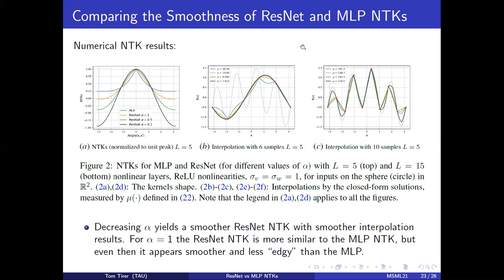And here is what we get with the NTK and you can observe the similarity. On the left, we present the kernels themselves, the NTK themselves, for MLP in blue and ResNet with different values of alpha. In the middle and the right, we present regression results for two cases.